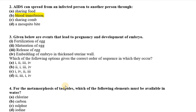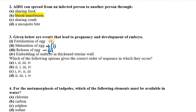The third question gives events that lead to pregnancy and development of an embryo, and we have to arrange them in the correct order. The sequence is: maturation of egg, then fertilization, followed by embedding of the embryo in the thickened uterine wall. The correct answer is option D.